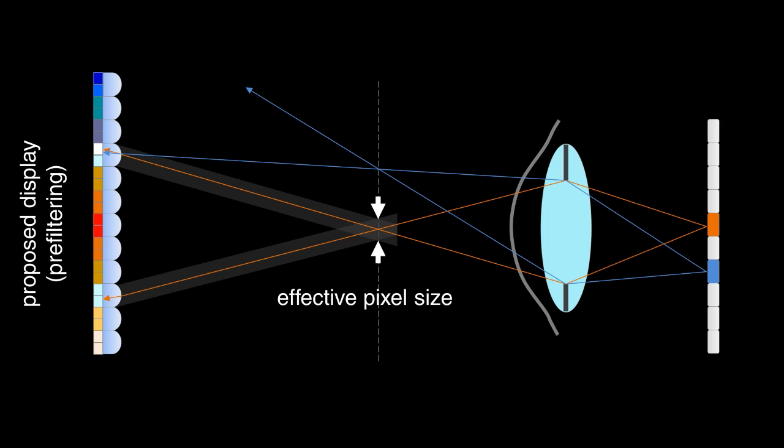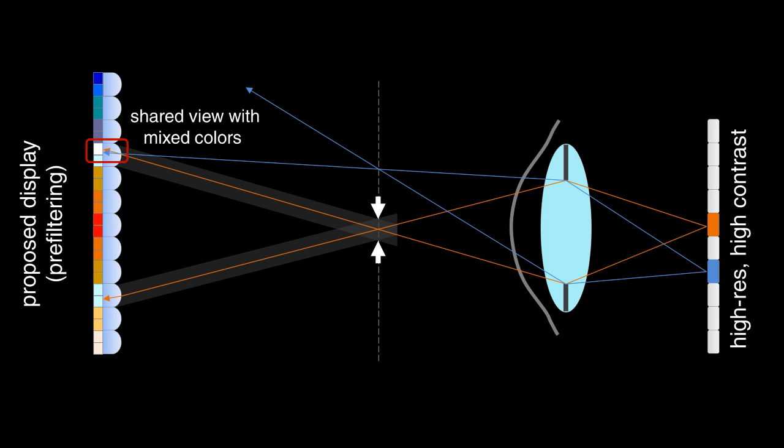Our method also uses a light field display, but since the light field is prefiltered, the pixels are smaller, and the resolution is higher. For some views, the colors are also mixed, but the contrast problem is reduced due to a higher angular sampling rate.